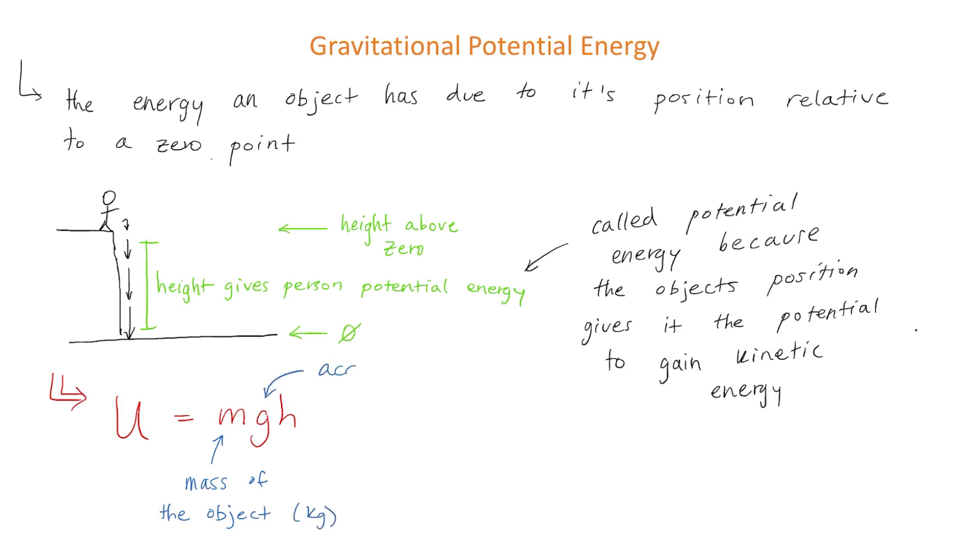g is the acceleration due to gravity and if your object is on earth that would be equal to 9.8 meters per second squared and h is the object's height relative to the zero point and u is the gravitational potential energy and it has units of joules.